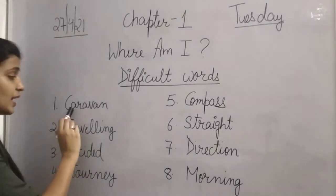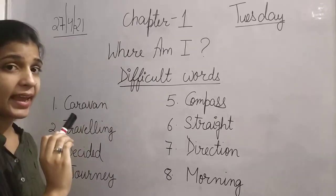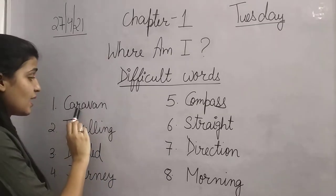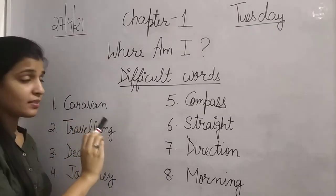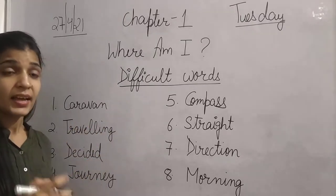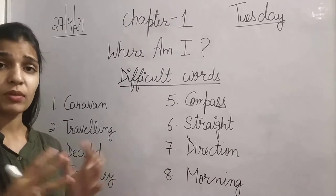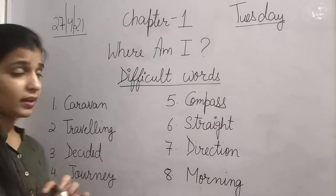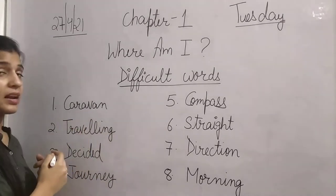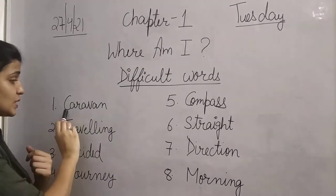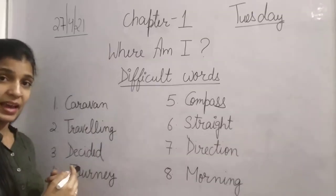The first word is C-A-R-A-V-A-N. It's caravan. The meaning of caravan is it is a type of huge vehicle. The spelling of caravan is C-A-R-A-V-A-N.